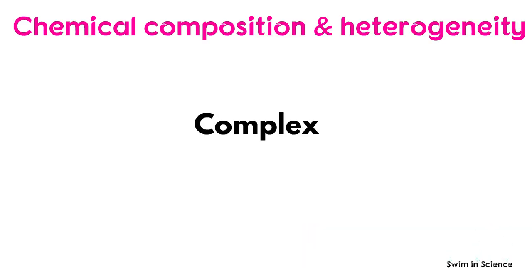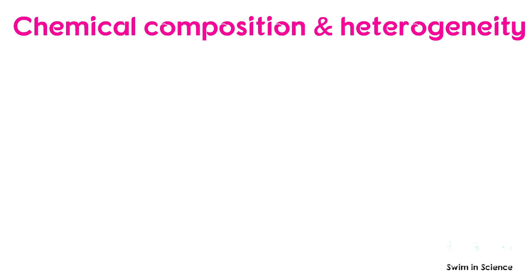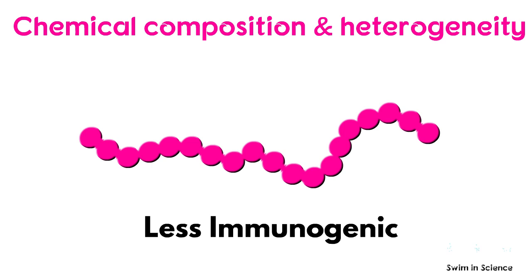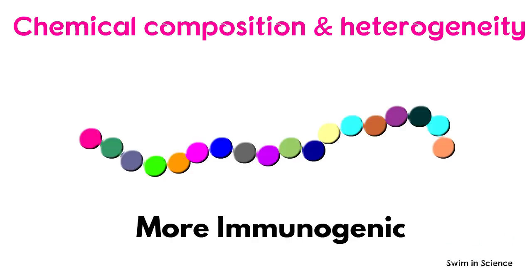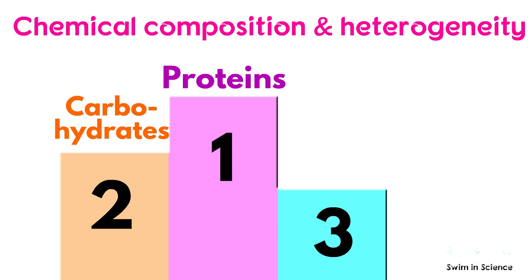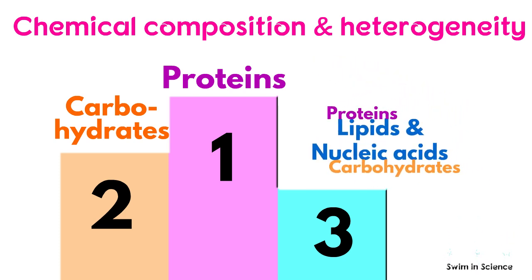Molecules must be complex and heterogeneous in composition in order to be immunogenic. For example, homopolymers composed of a single type of amino acid or monosaccharides are less immunogenic. On the other hand, heteropolymers are considered to be more immunogenic. Generally, proteins are the most potent immunogens with carbohydrates ranking second. In contrast, lipids and nucleic acids generally do not act as antigens unless they are combined with proteins or carbohydrates.